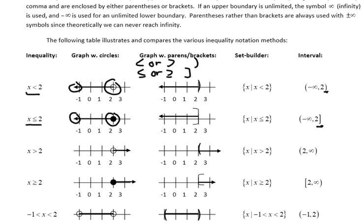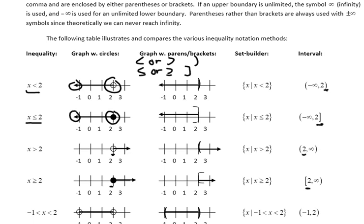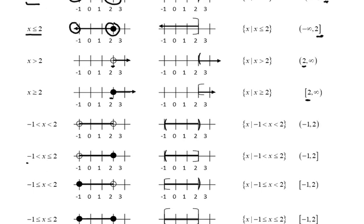Similarly, x is greater than 2 starts at 2 and goes to infinity — 2 is not included, so it's a parenthesis. For x is greater than or equal to 2, the 2 is included and gets a bracket. For a compound inequality like negative 1 is less than x which is less than or equal to 2, the negative 1 is not included so we use a parenthesis, and 2 is included so we use a bracket. Set builder notation uses braces and reads: all x such that x is less than or equal to 2.